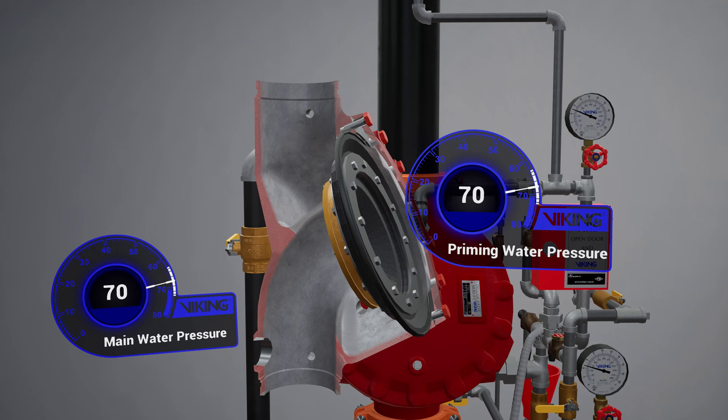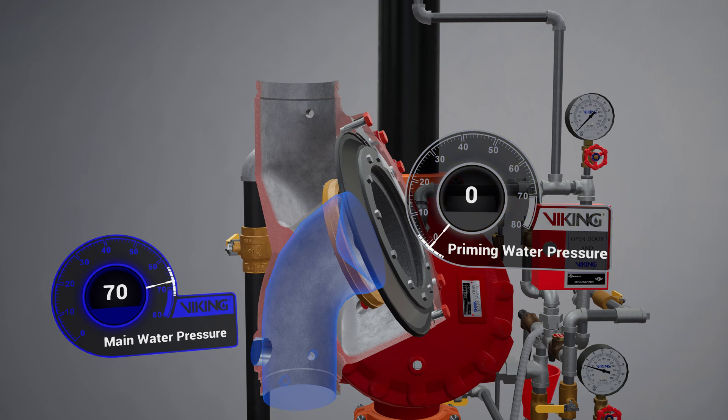During a fire when the releasing system operates, pressure is released from the priming chamber. The deluge valve clapper opens to allow water to flow into the system piping.